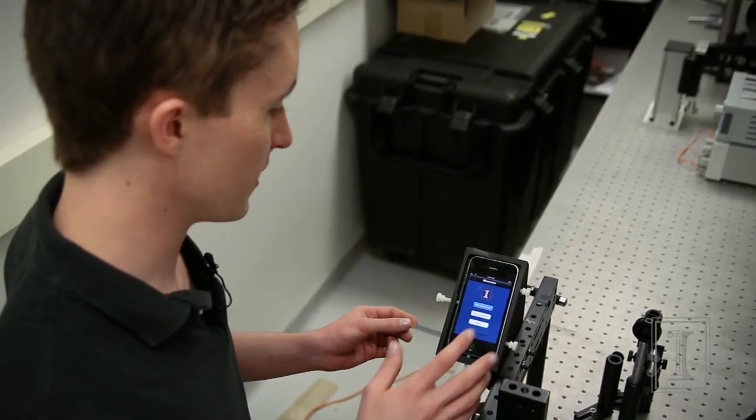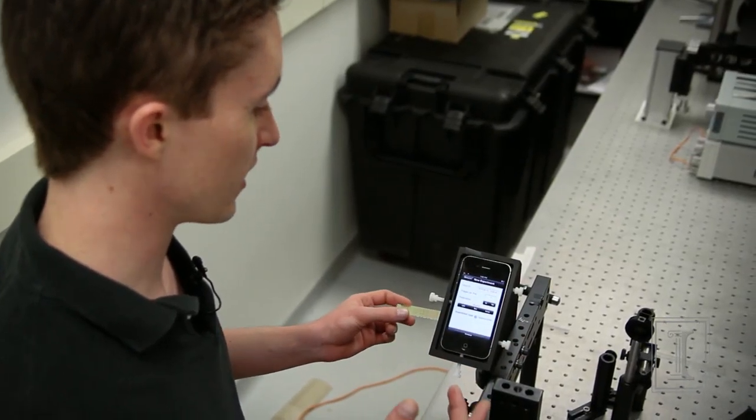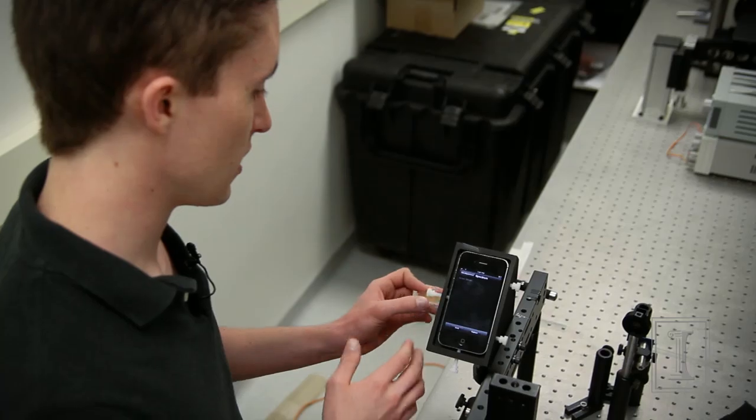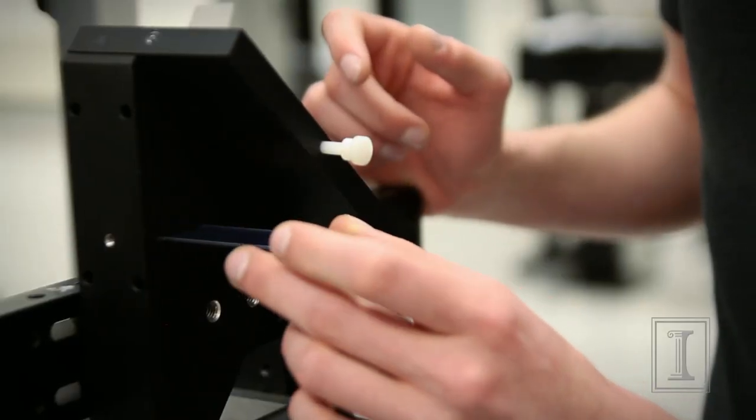So first off we're going to select a new experiment. We're then going to take our sample and we're going to put it in the little cartridge position right back here.